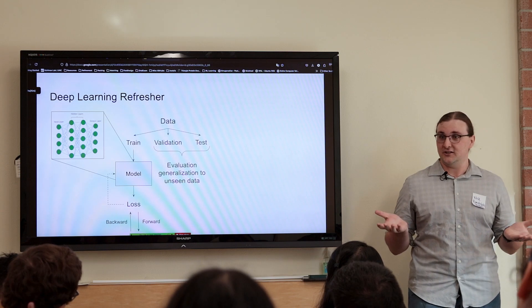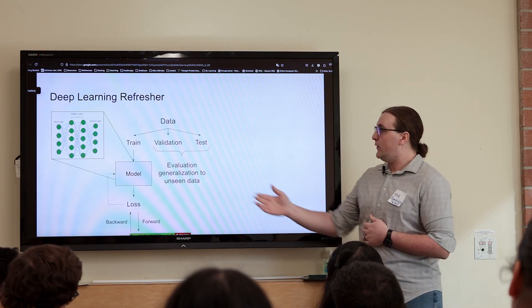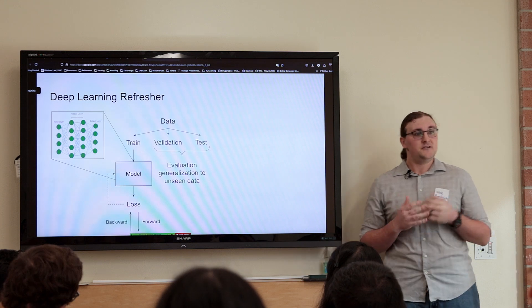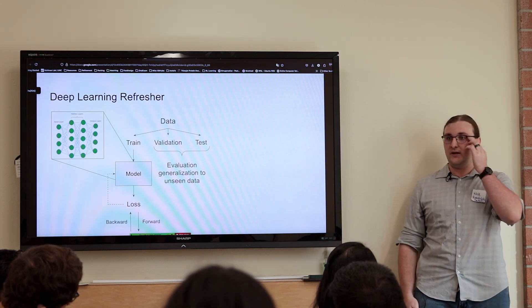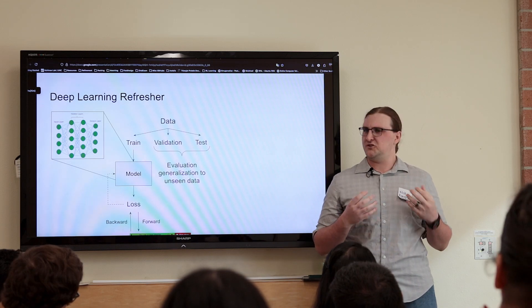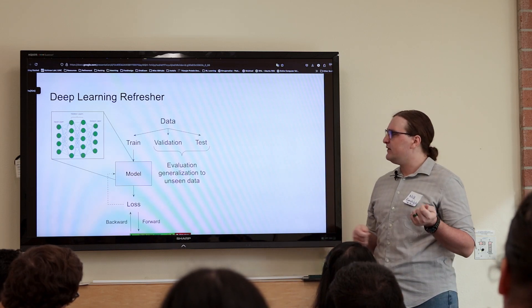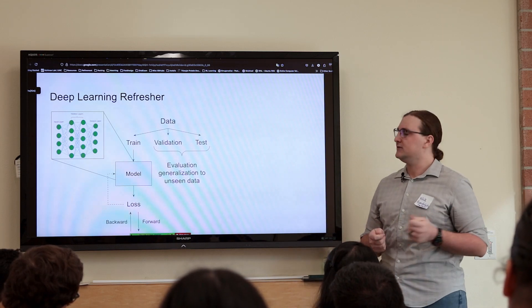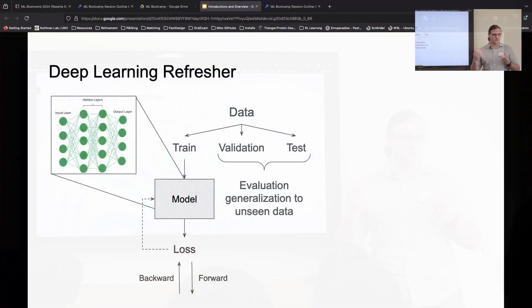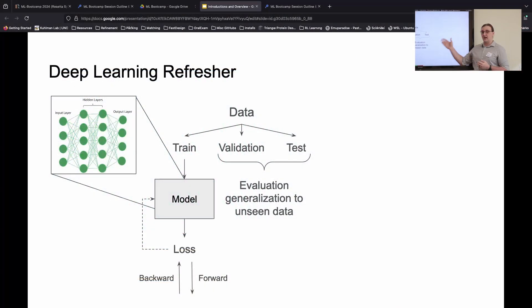Speaking of generalization, how do we actually measure that? Well, we also withheld these two sets, the validation set and the test set. These are used to evaluate how good our model is doing, how much it's learning. When we're doing the model development, we might be changing the architecture or some different components, changing some internal parameters. How do we actually compare between those different versions of the model itself? We use the validation set.